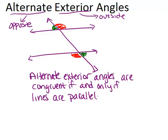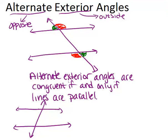The first conditional says: if alternate exterior angles are congruent, then lines are parallel. That's the situation where if we have two alternate exterior angles marked as being the same — so if this angle is 100 degrees and this angle is 100 degrees — then even though the lines weren't marked as parallel, I know they have to be parallel.